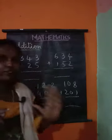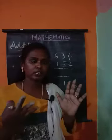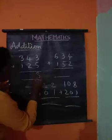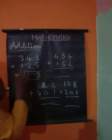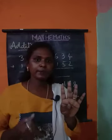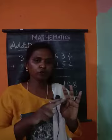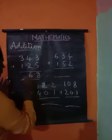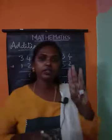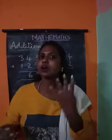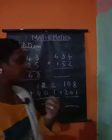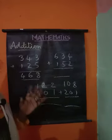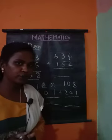Here we have 5 and 3, so counting up: 5, 6, 7, 8 — I got 8. Then 4 plus 2: 4, 5, 6 — I got 6. Then here I have 3, and 3 plus 1 is how much? It is 4. So I got 468. I hope you understood this.